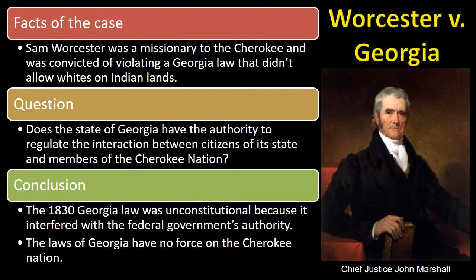In 1828, the Cherokee Nation sought an injunction to prevent laws passed by the state of Georgia depriving them of their rights. The Supreme Court refused to hear the case because it doesn't have original jurisdiction; it can only hear appeals. A few years later, in the case of Worcester v. Georgia, Sam Worcester was a missionary to the Cherokee and was convicted of violating a Georgia law that didn't allow whites on Indian lands. The Supreme Court had to answer the question: does the state of Georgia have the authority to regulate the interaction between citizens of its state and members of the Cherokee Nation? The Supreme Court ruled in 1830 that the Georgia law was unconstitutional because it interfered with the federal government's authority. The laws of Georgia have no force on the Cherokee Nation. The Worcester case is important not just for the facts, but for the conclusion. The decision lays out the relationship between the federal government and the state governments in regard to American Indian tribes. The Marshall Court establishes the precedent that Indian tribes are distinct communities that exist outside the state and therefore are not subject to state laws.